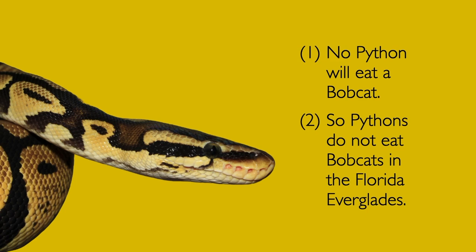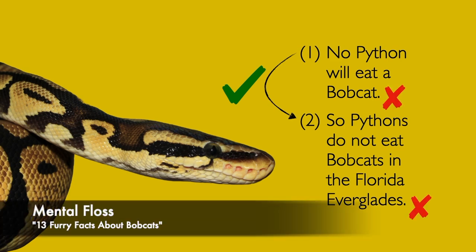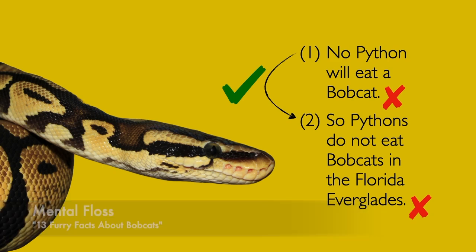Here's another example: No python will eat a bobcat. So pythons do not eat bobcats in the Florida Everglades. The premise offers a rock-solid reason for believing the conclusion. This is a valid argument, and that's good. But every single statement here is false — that's bad. So remember: valid does not mean true.